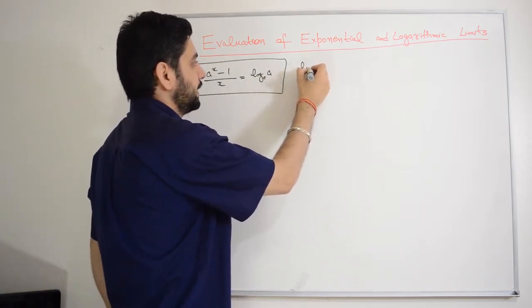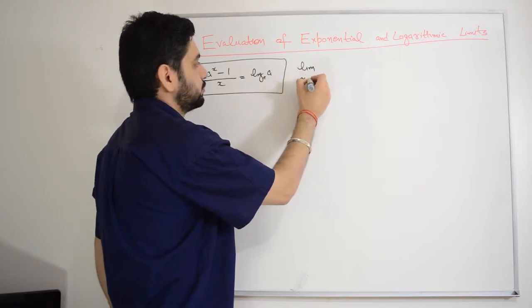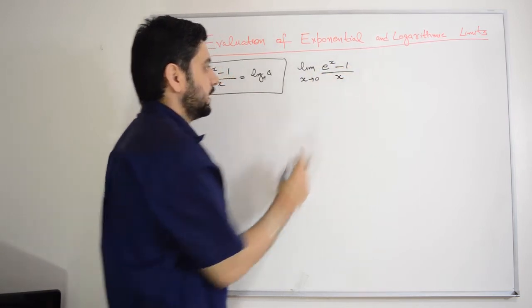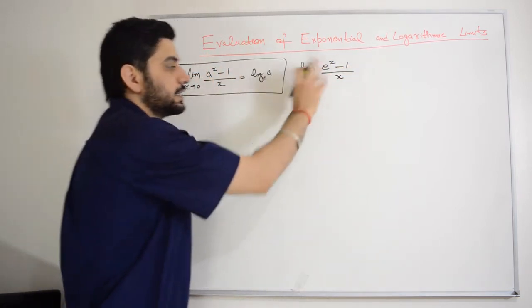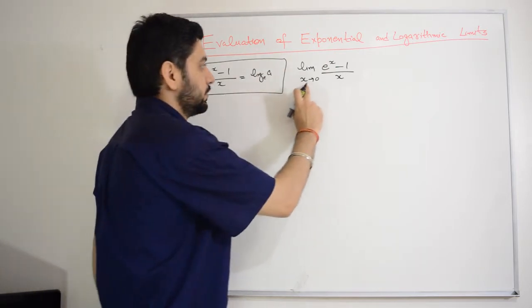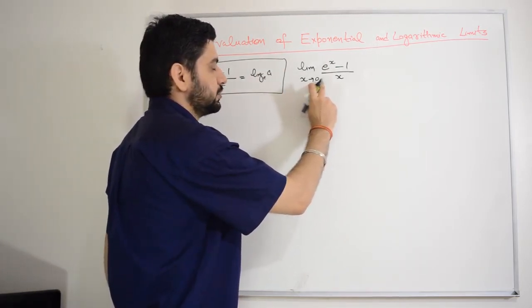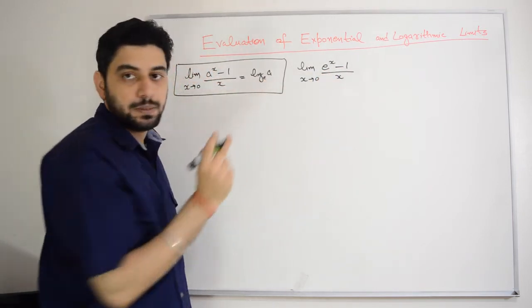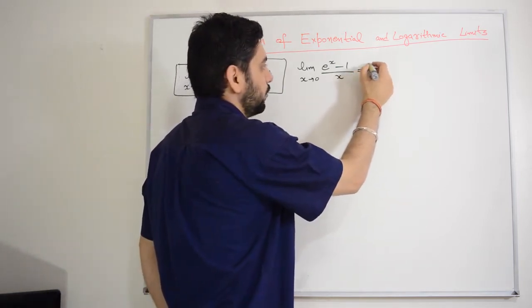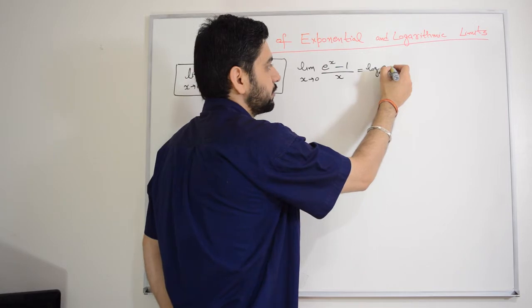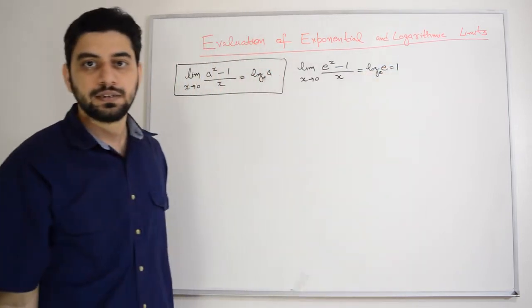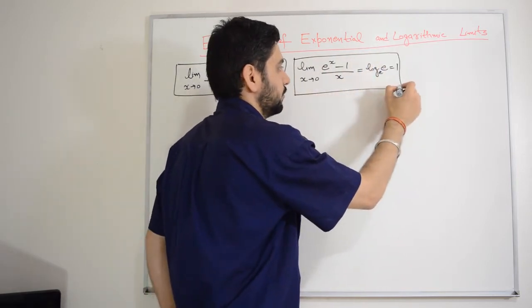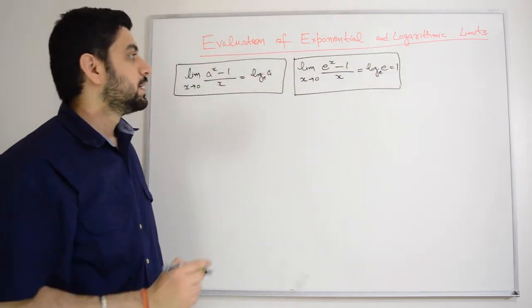The second standard result is: limit x tends to zero, e raised to power x minus 1, divided by x. Since here a equals e, we get log of e to the base e, which equals 1. So this limit equals 1. This is the second standard evaluation result.